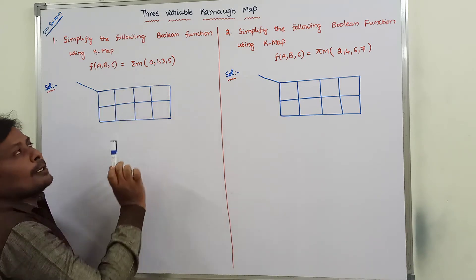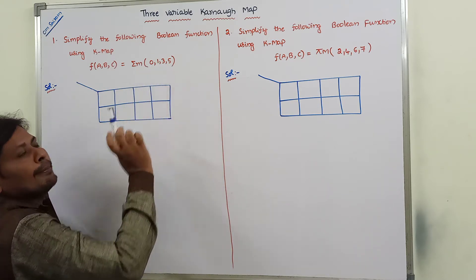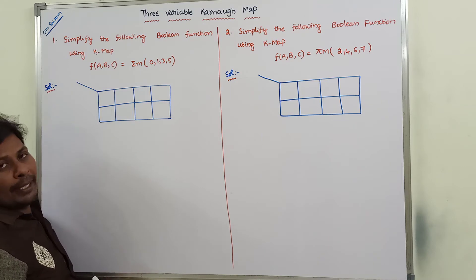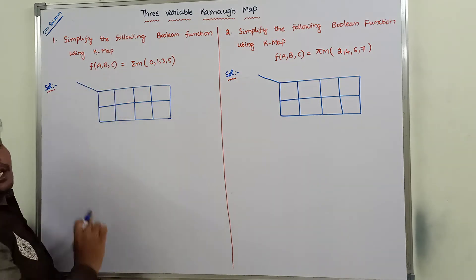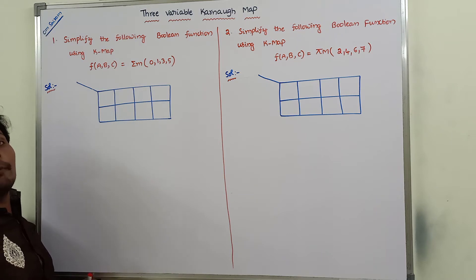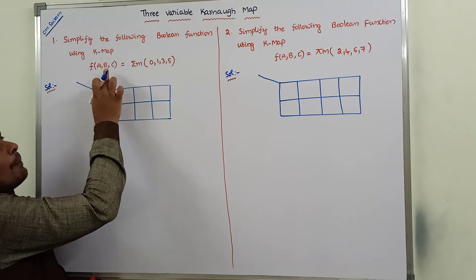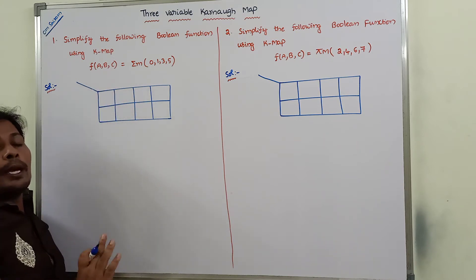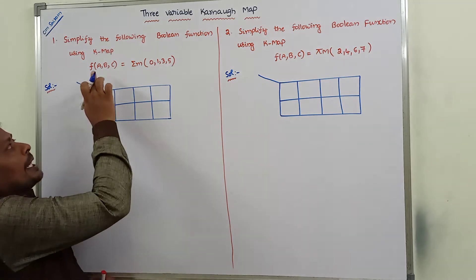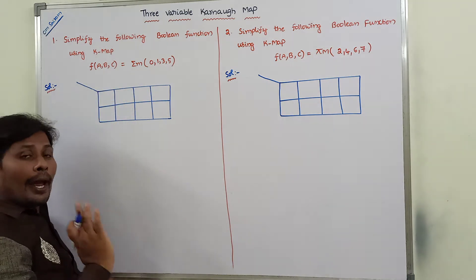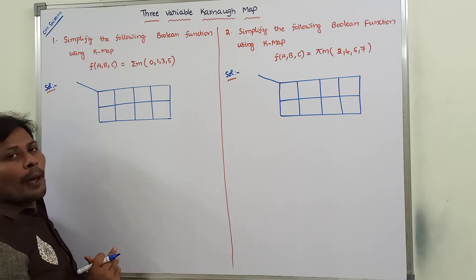In the given function, how many variables are there? 3 variables are there. So, based on the number of variables, we are using the corresponding Karnaugh map. Since 3 variables are there, hence we have to use the 3-variable Karnaugh map.